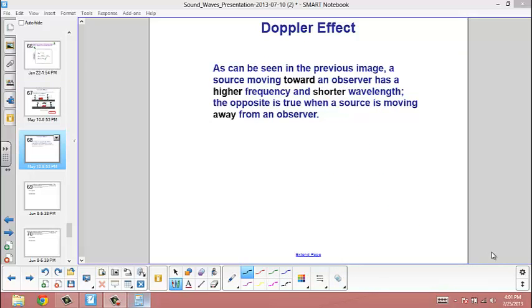As can be seen in the previous image, a source moving toward an observer has a higher frequency and a shorter wavelength. The opposite is true when a source is moving away from an observer. It will have a lower frequency and a higher wavelength.